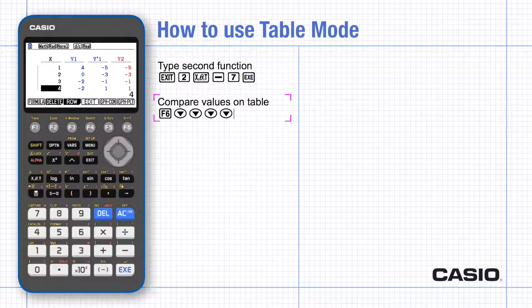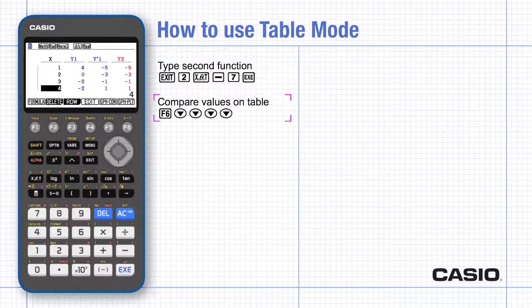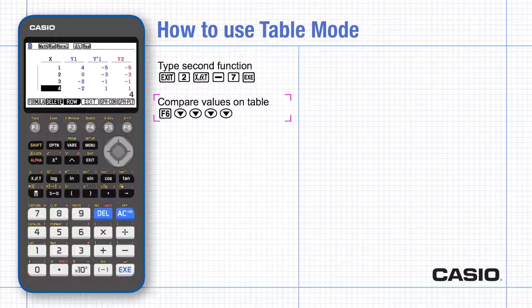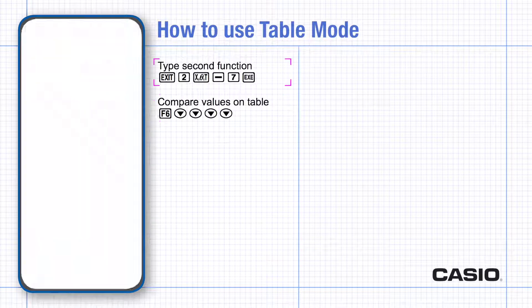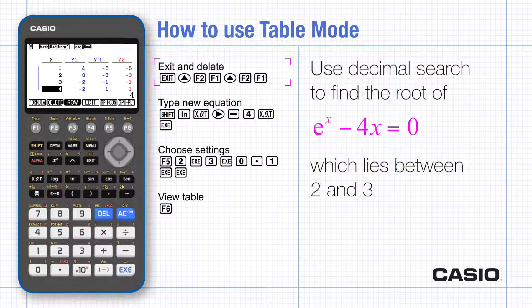Table mode makes decimal search a very easy method for solving equations by zooming in on the interval containing the root. Evidence can be found for the root to as many decimal places as necessary. Exit and delete the existing functions.